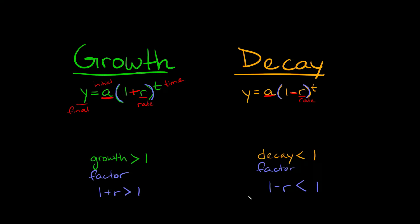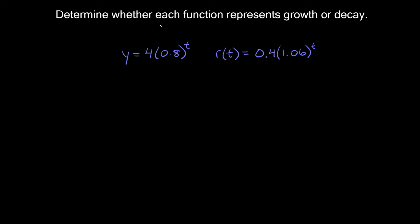Now let's jump into some examples. The first few examples say: determine whether each function represents growth or decay. The easy way is just to look at your growth or decay factor — what's inside the parentheses. If it's bigger than one, it's growth; if it's less than one, it's decay. Here we have 0.8, which is less than one, so this function represents an exponential decay function.